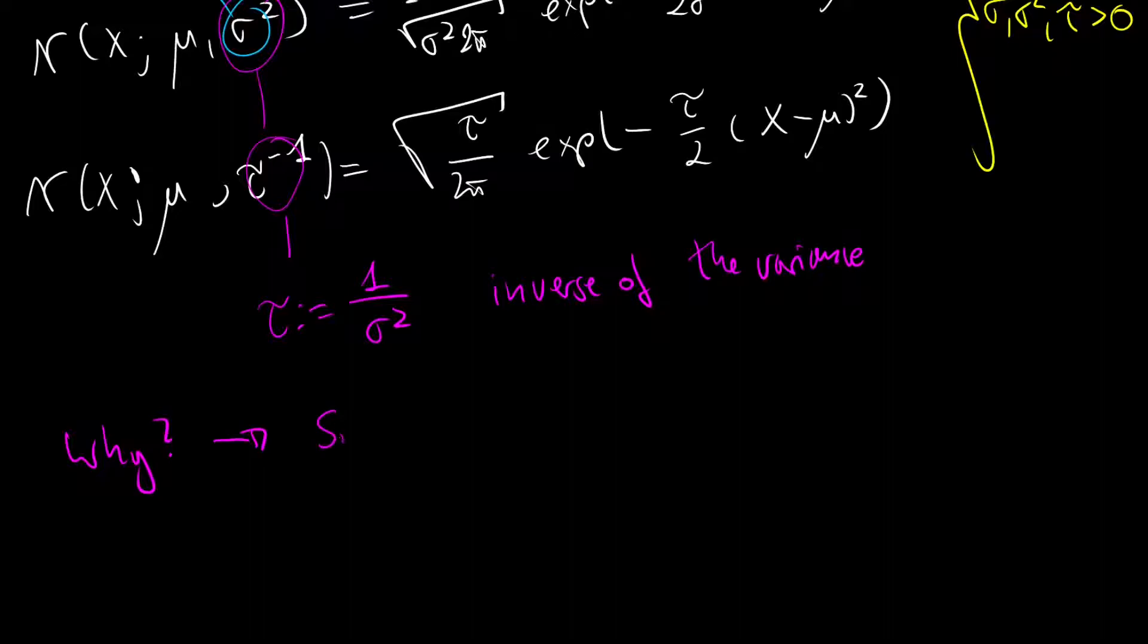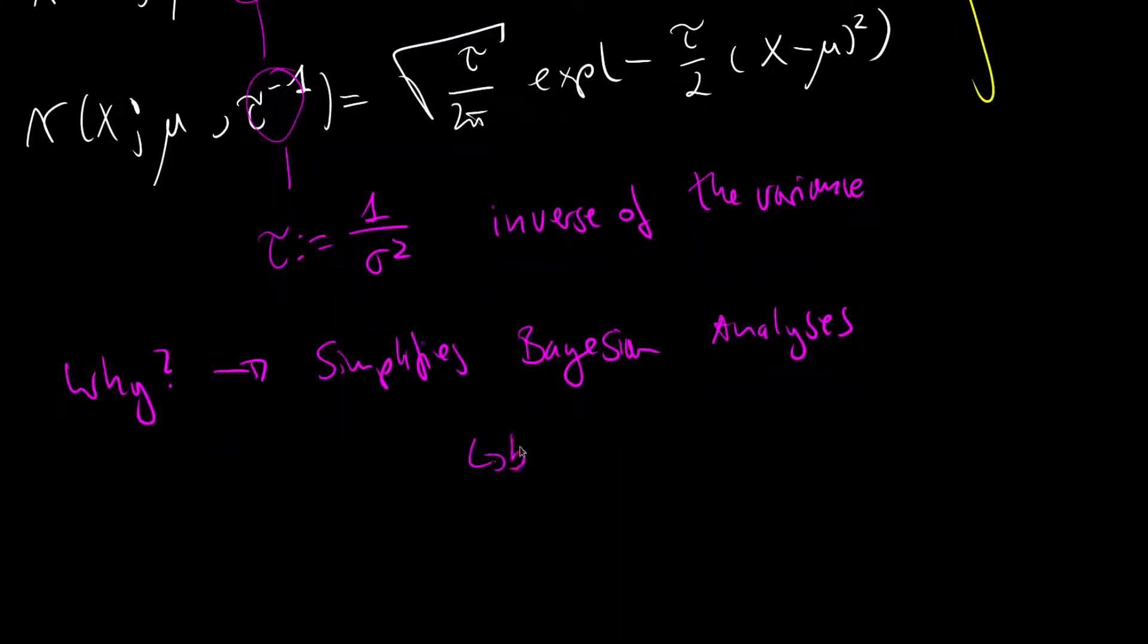And the reason is that it simplifies certain Bayesian analyses. By this I mean for instance if we want to calculate posteriors or if we want to do other manipulations, because then the sigma does not appear in the denominator anymore, it is in the numerator. Because tau is in the numerator.